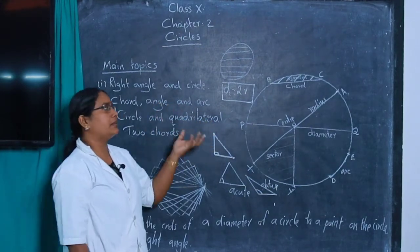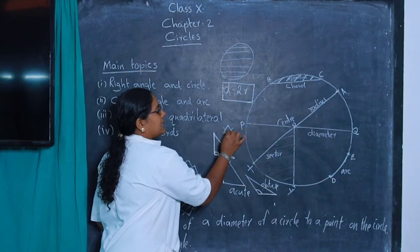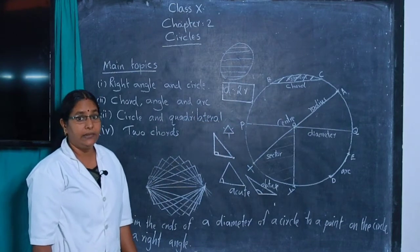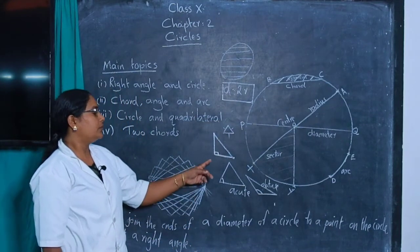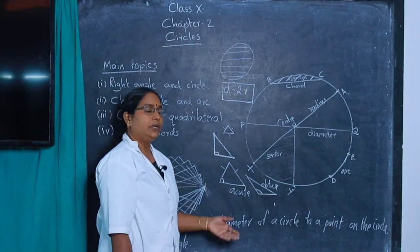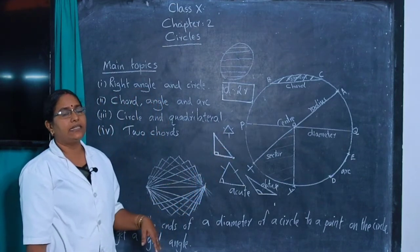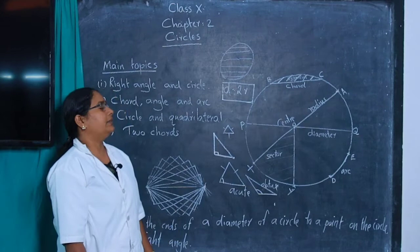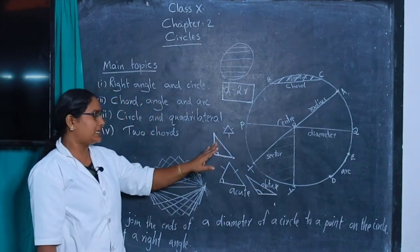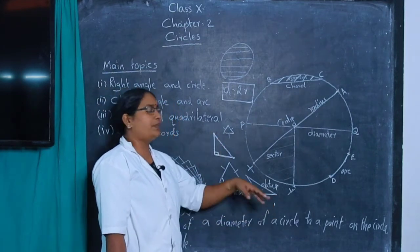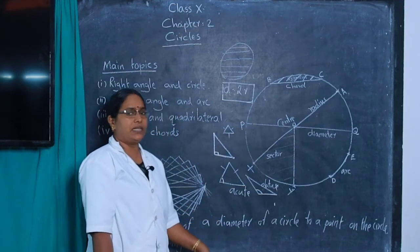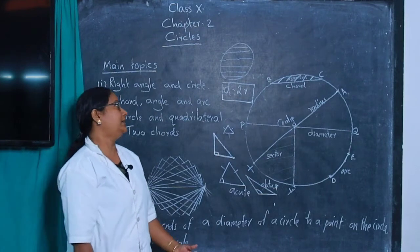Triangles are of three types by sides. A triangle with three equal sides is called an equilateral triangle. A triangle with two equal sides is called an isosceles triangle. A triangle with three different sides is called a scalene triangle. By angle, triangles are: right-angled, acute-angled, and obtuse-angled.